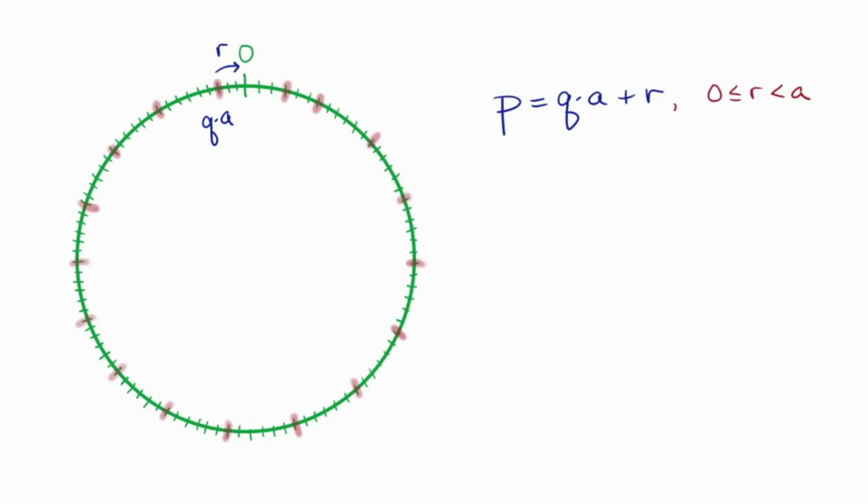Now, it might be, depending on how the multiples lie, that you actually want to think about the multiple just past 0 instead of just before it. So then we write p is q plus 1 times a minus a minus r, because q plus 1 times a is the next multiple, the one that's just past 0. Then the distance to 0 is a minus r, and just like in the first case, this distance is smaller than a.